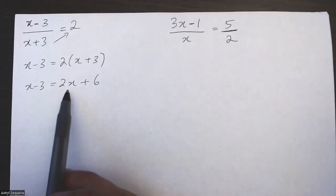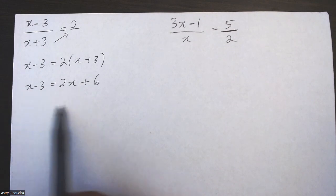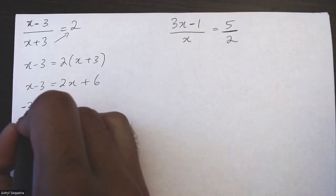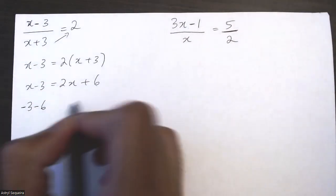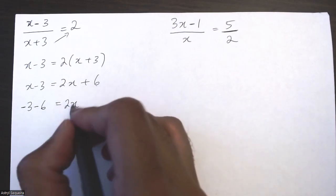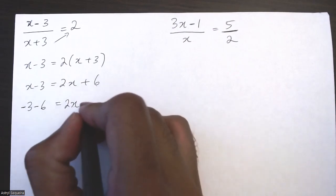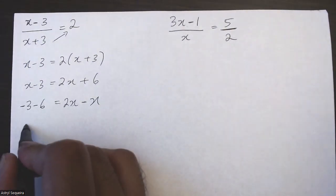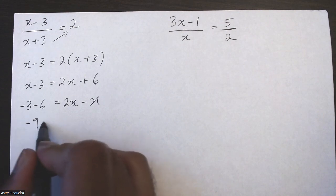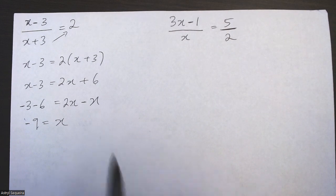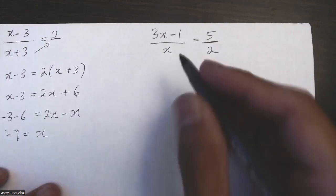I'm going to move like terms to the same side — moving the x to this side and the 6 to this side. So I have negative 3 minus 6 because the plus 6 becomes minus 6, and on this side I have 2x minus x. Negative 3 minus 6 is negative 9, and 2x minus x is just x. So x = -9 is my final solution for the first one.